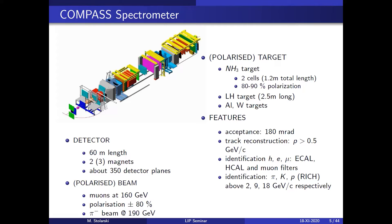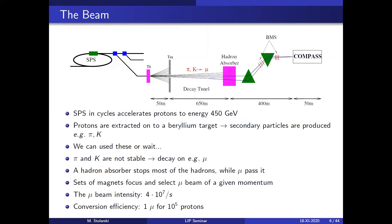In the results I'll present today, we use a pi-minus beam at higher energy. We also have a polarized target — mostly NH3 — with two cells of about two meters total length, where we can reach polarizations of 80 to 90 percent. We also have liquid hydrogen targets. COMPASS has a RICH detector, a HCAL and ECAL, and muon filters for particle identification.